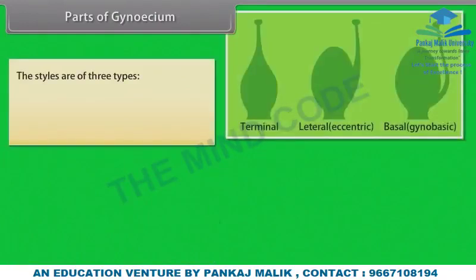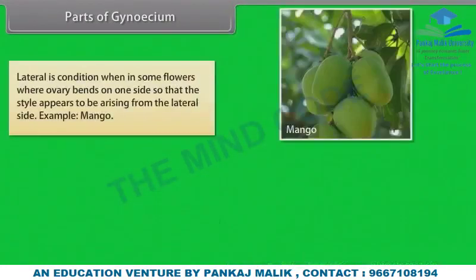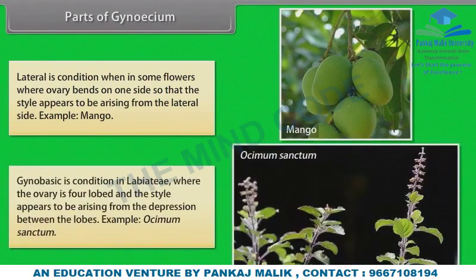A carpal consists of three parts: stigma, style, and ovary. The stigma is usually at the tip of the style and is the receptive surface for pollen grains, situated on the top of the ovary. The style is a long slender structure which develops from the upper part of the ovary and connects the ovary to the stigma. The styles are of three types: Terminal or apical — when the style is situated on the top of the ovary in line with the ovary, example Hibiscus rosa-sinensis; Lateral — when the ovary bends on one side so that the style appears to arise from the depression between the lobes, example Ocimum sanctum; Gynobasic.